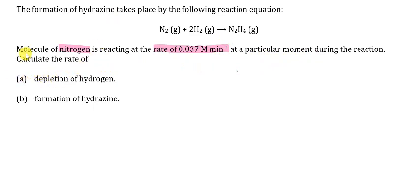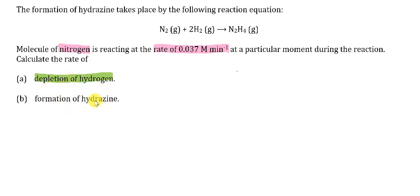The first question asks you to calculate the rate of depletion of hydrogen — depletion means the disappearance of hydrogen since hydrogen is the reactant. Even though the question didn't ask you to write the differential rate equation, you have to write it down, because from the differential rate equation you can see the relationship between the reactants and the product.